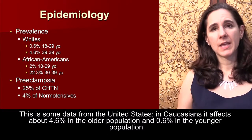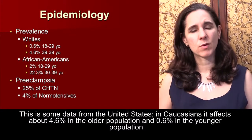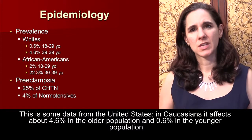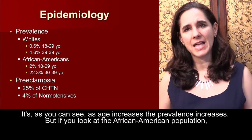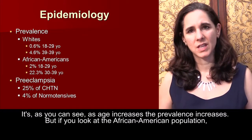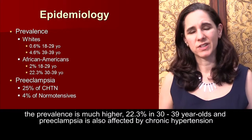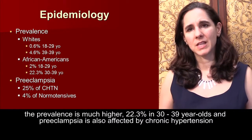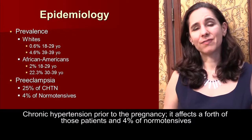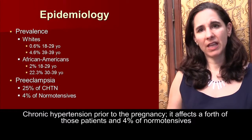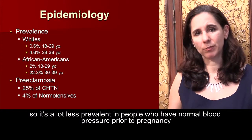Looking at U.S. data, in Caucasians it affects about 4.6% in the older population and 0.6% in the younger population — as age increases, the prevalence increases. In the African-American population the prevalence is much higher: 22.3% in 30-39-year-olds. Preeclampsia is also affected by chronic hypertension; it affects a fourth of those patients versus 4% of normotensive patients, so it's much less prevalent in people with normal blood pressure prior to pregnancy.